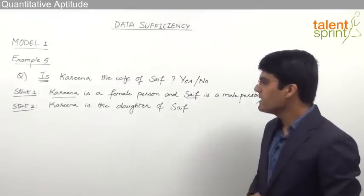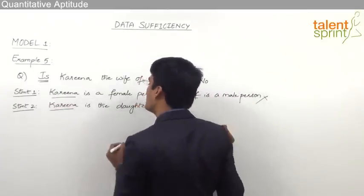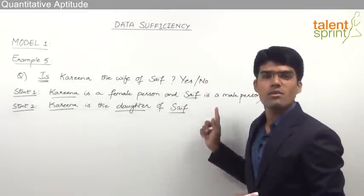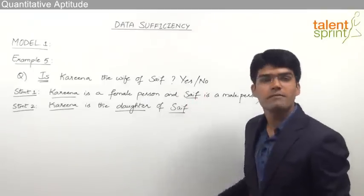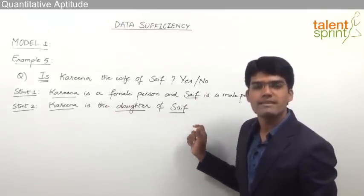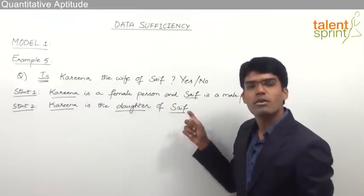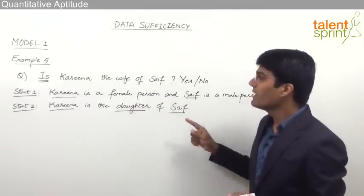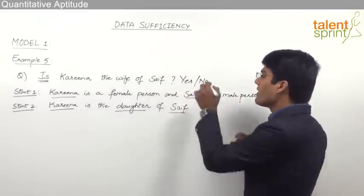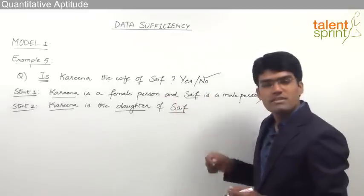Let us now look at statement 2. Statement 2 says Kareena is the daughter of Saif. Very clearly, statement 2 mentions that Kareena is the daughter of Saif, so she cannot be the wife of Saif. From statement 2 we know the relationship — they are father and daughter. That means for the question 'Is Kareena the wife of Saif?', the answer should be no, and this we are able to say from statement 2 alone.